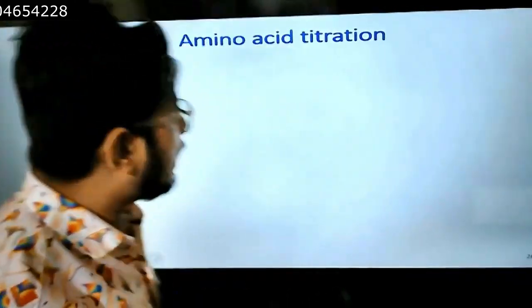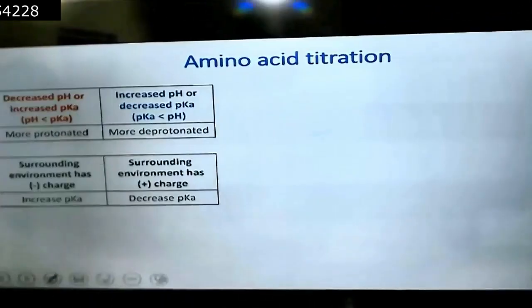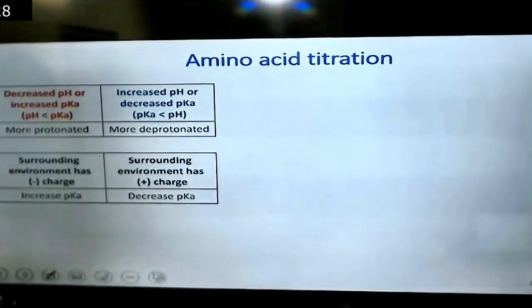The more difficult titration curve will be seen in case of lysine, arginine, histidine, aspartic acid and glutamic acid. These are the five which you need to prepare for CSIR NET. If you practice one, rest of them will be clear. But before that, let's talk about the rule.